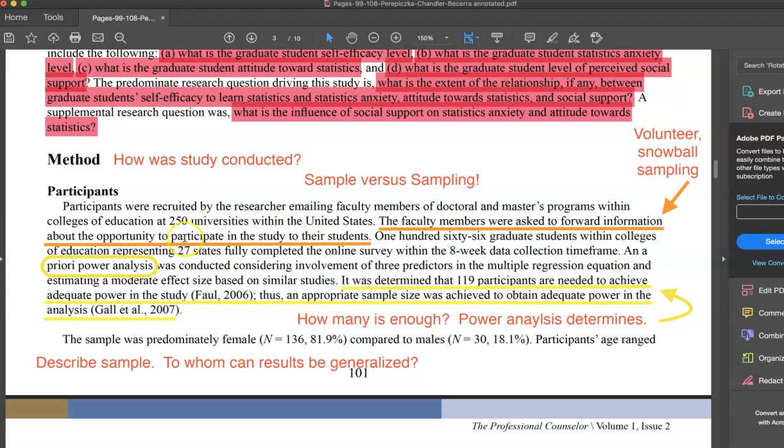After they do that, they then got 166 graduate students. Now they needed to know, okay, is this an appropriate sample size? And to do that, they conducted a power analysis. And that power analysis determined that in order to have a moderate effect size, they would need to have at least 119 participants to achieve adequate power.